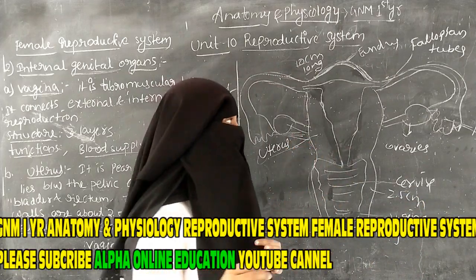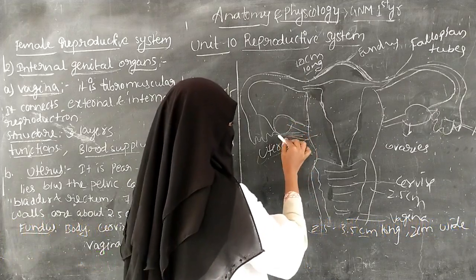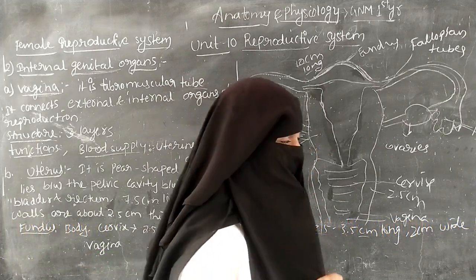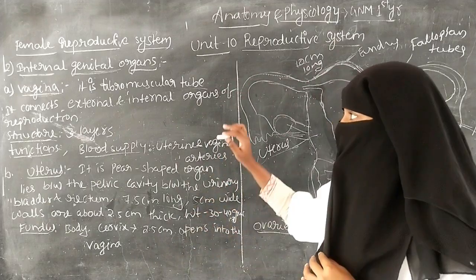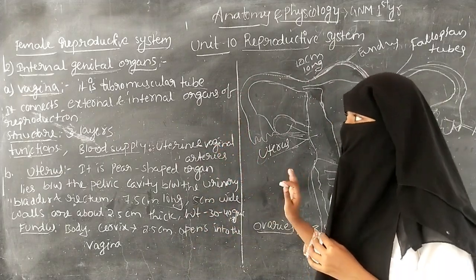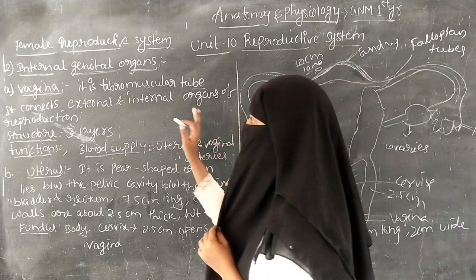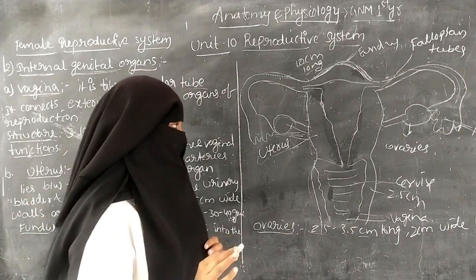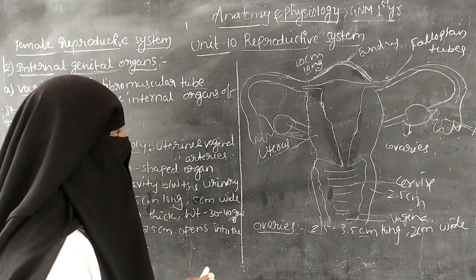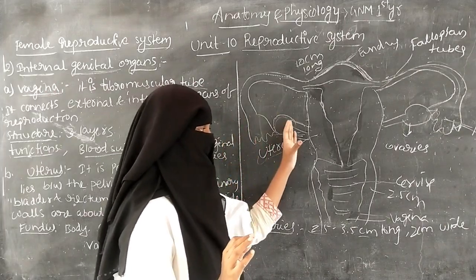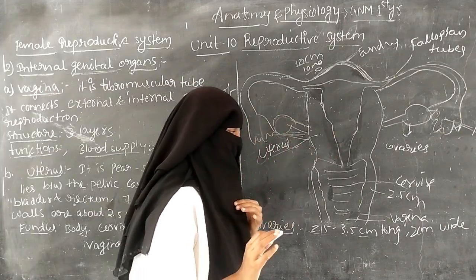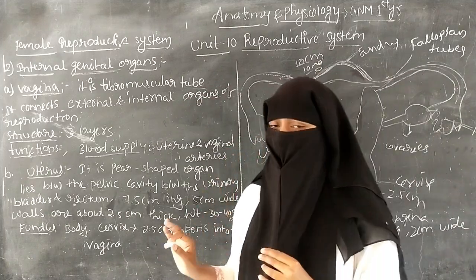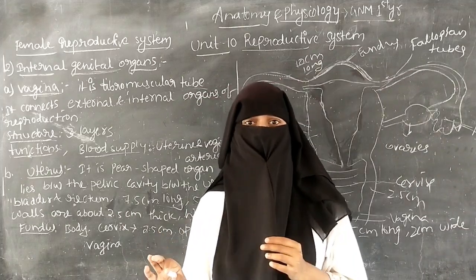The internal genital organs include the vagina, uterus, fallopian tubes, and ovaries. This completes the overview of the female reproductive system.